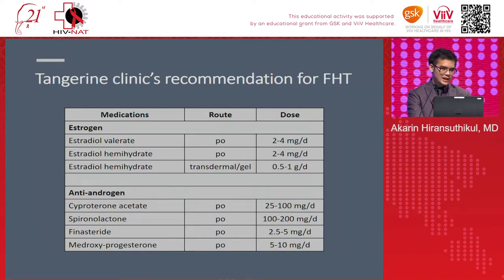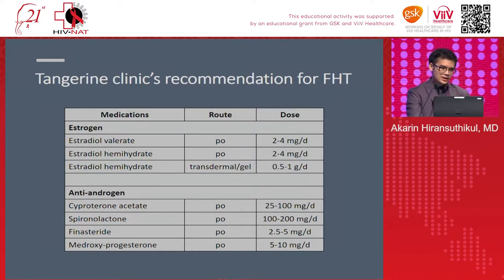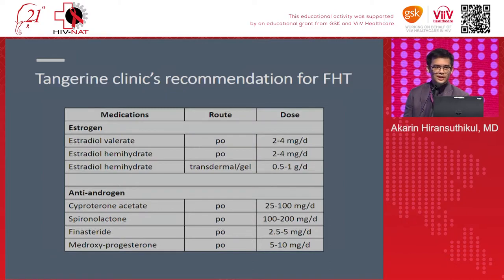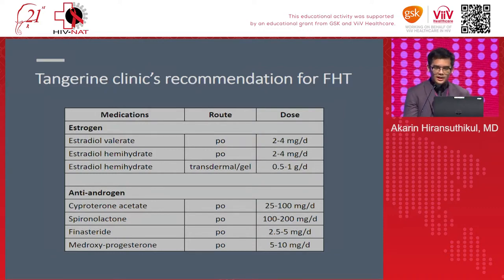These are just a few of the recommendations from our Tangerine Clinic for feminizing hormone therapy. There are many forms of estrogen and many routes — oral, transdermal by patches, by gel — and a wide range of doses. For anti-androgens, we have cyproterone acetate or CPA, spironolactone, finasteride, and medroxyprogesterone. In Thailand, CPA is among the most commonly used. The doses range very widely, conveying that these patients should receive care under professional supervision, as specific doses correspond to each person's secondary sex characteristics at that point in time.